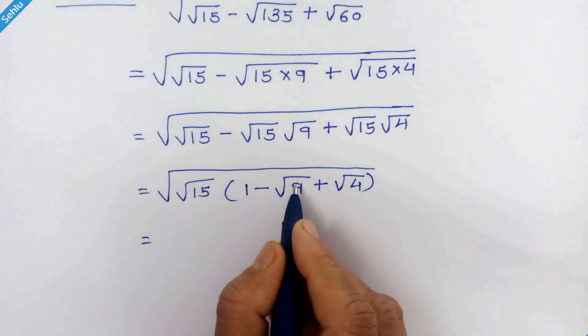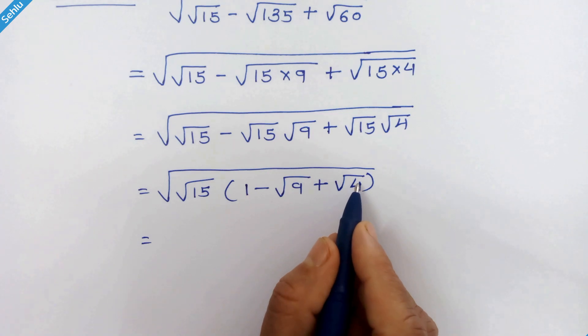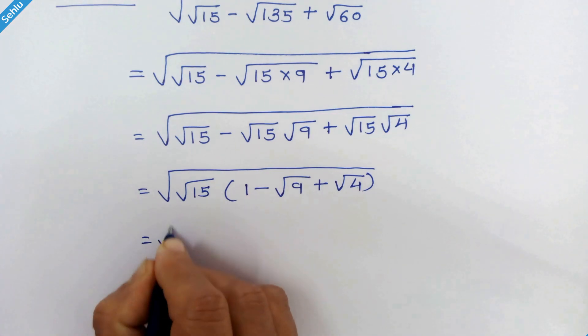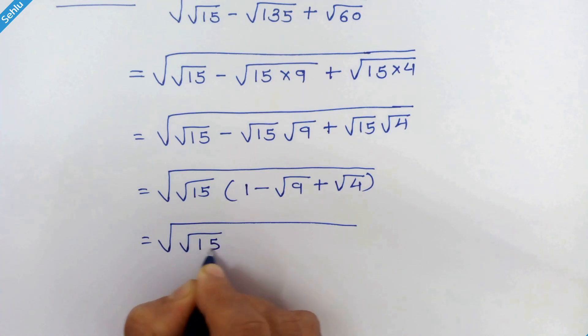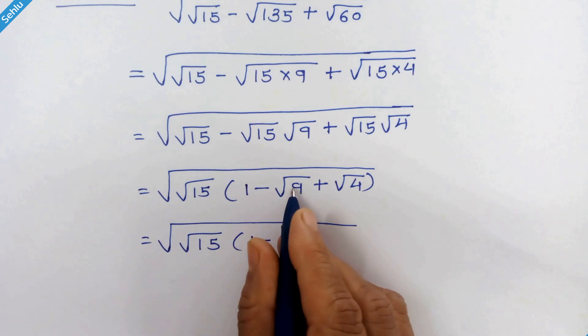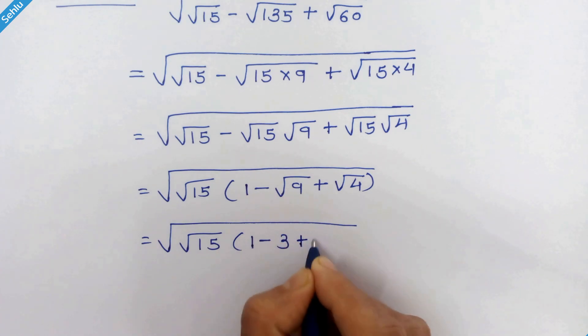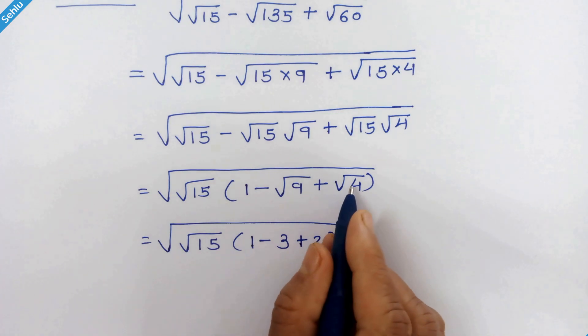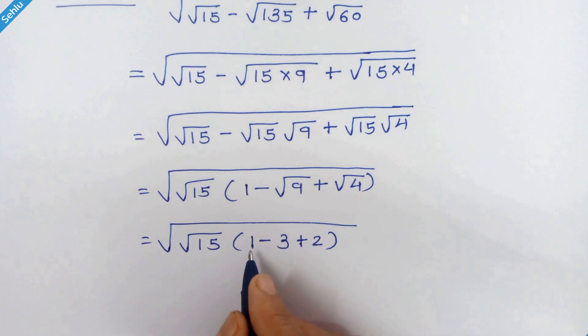Now we all know square root 9 is 3 and square root 4 is 2. So we can write it like square root of square root 15 times 1 minus 3 plus 2. Now 1 minus 3 plus 2 is 0.